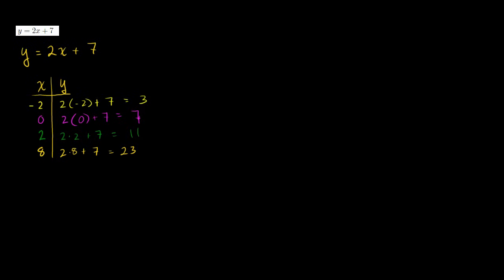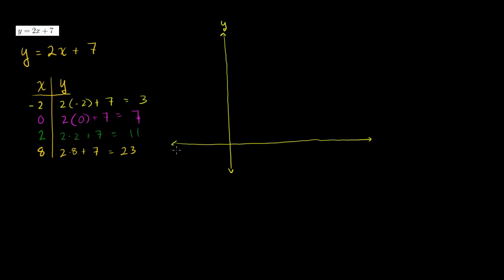Now let's graph it. Let me draw my y-axis right there and my x-axis. I have a lot of positive values, so I want a lot of space on the positive y side. On the x-axis I'll mark: negative 2, negative 1, 0, 1, 2, 3, 4, 5, 6, 7, 8. Those are our x-values.